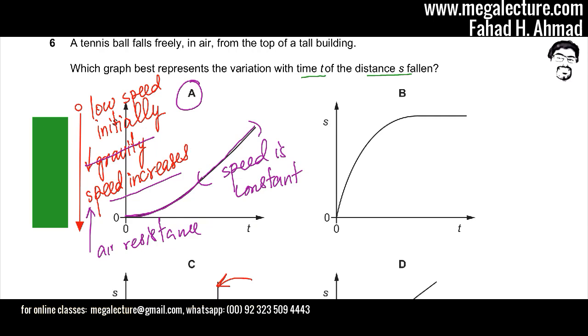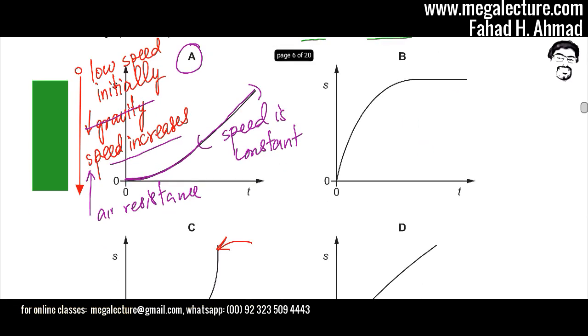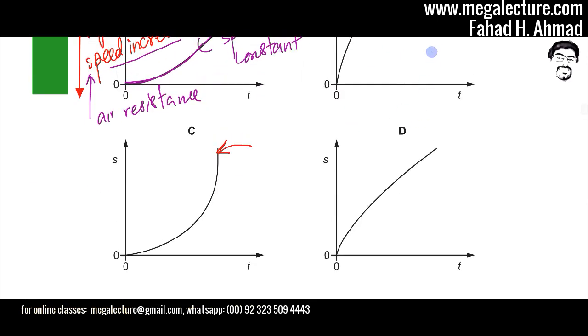So option A is going to be your correct option. The other options, B and C, are incorrect because in B, the distance covered eventually goes to zero, which means that it slowly becomes lesser and lesser. Although speed is increasing, which means greater distance would be covered as time progresses. And the same is the case - both graphs B and D have exactly or almost the same shape. The speed is decreasing.